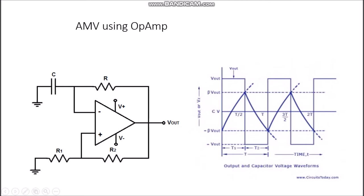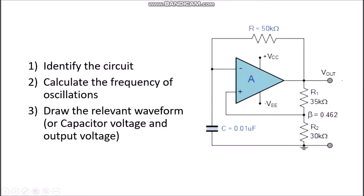The inverting terminal voltage becomes more than the non-inverting terminal and hence the output switches from plus Vz to minus Vz. As soon as the output voltage becomes minus Vz, the threshold voltage or reference voltage changes to minus beta Vz, where beta equals R1/(R1 + R2). The capacitor, which was charged to plus beta Vz, now tries to discharge toward negative voltage. As soon as it becomes more negative than minus beta Vz, the output switches from minus Vz back to plus Vz. This is how the astable multivibrator works.